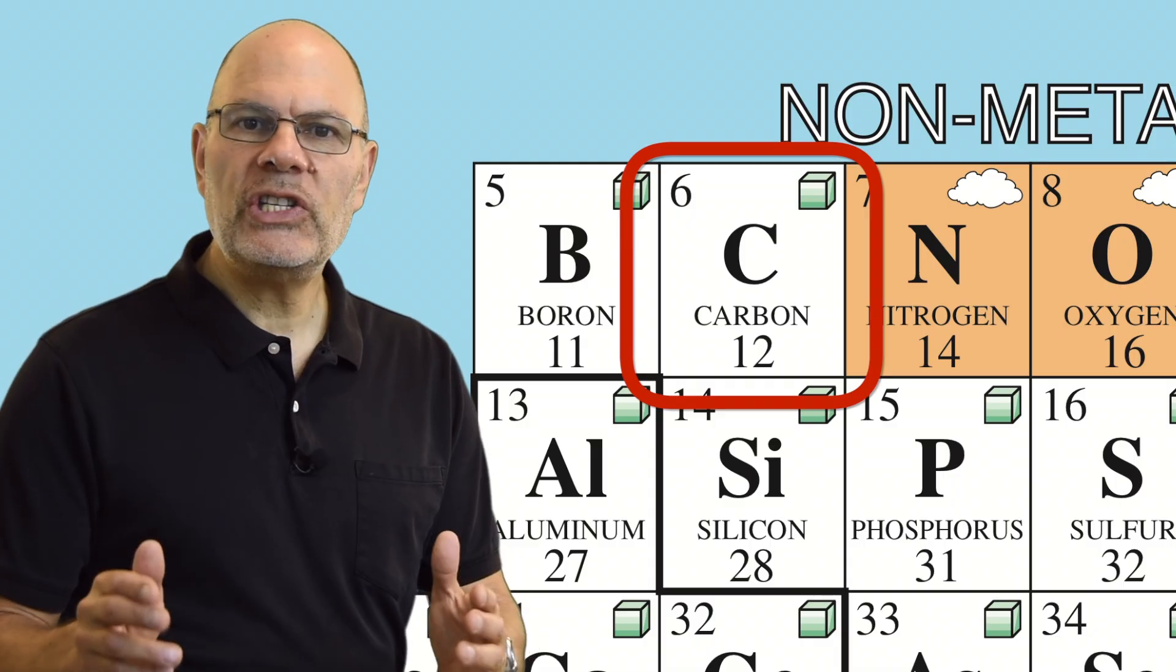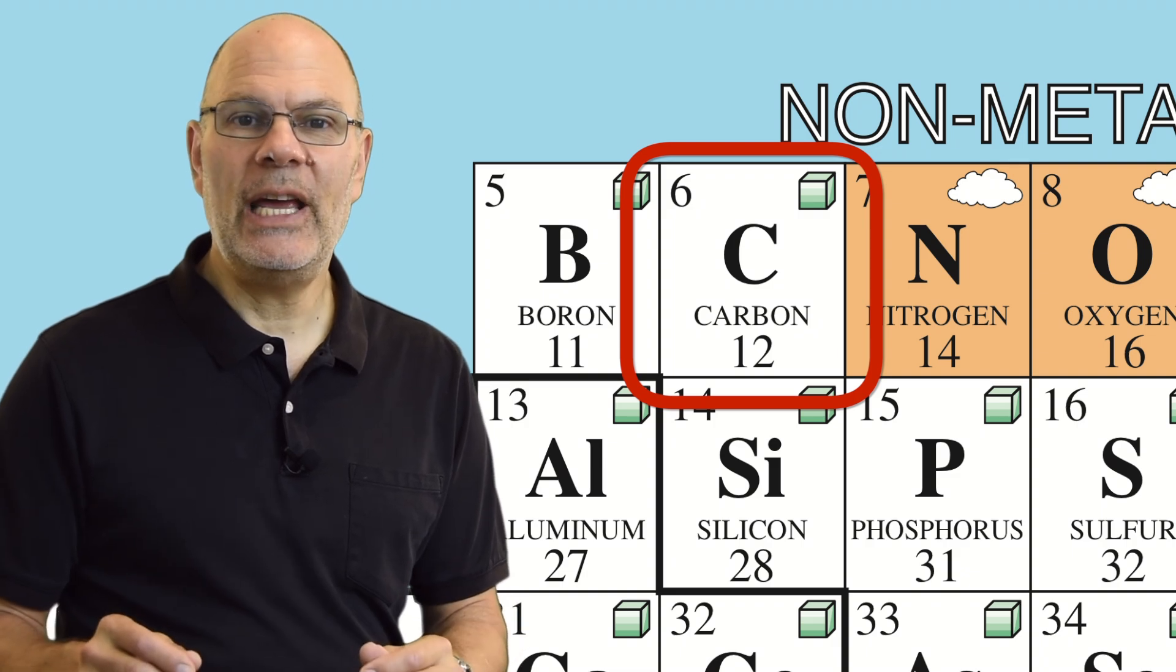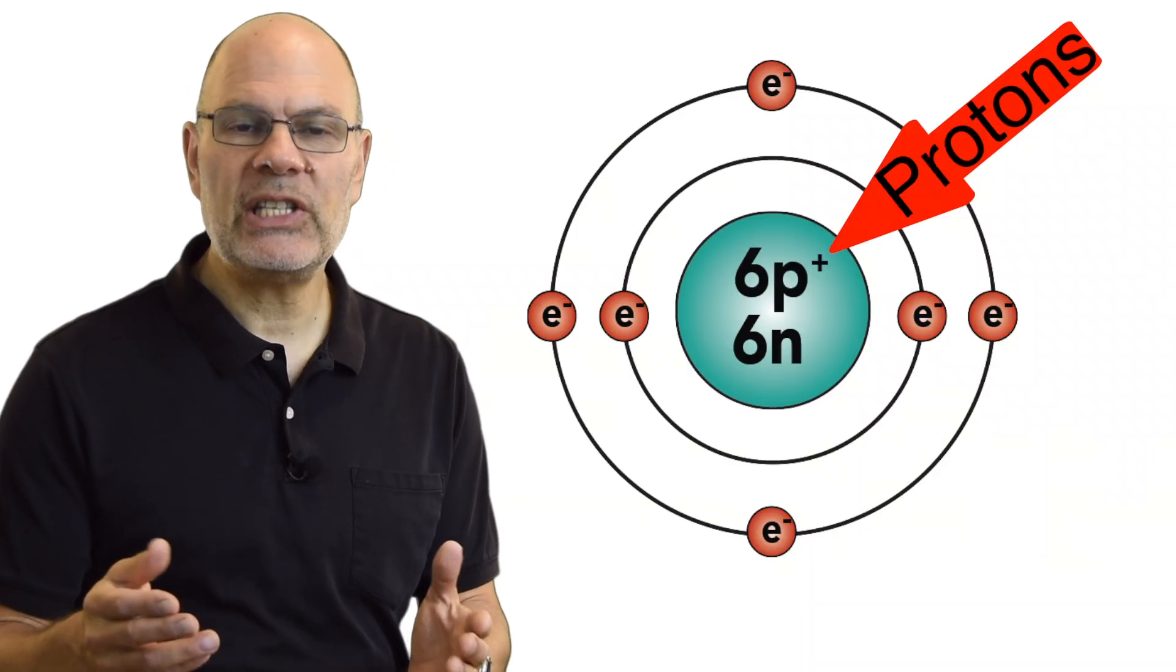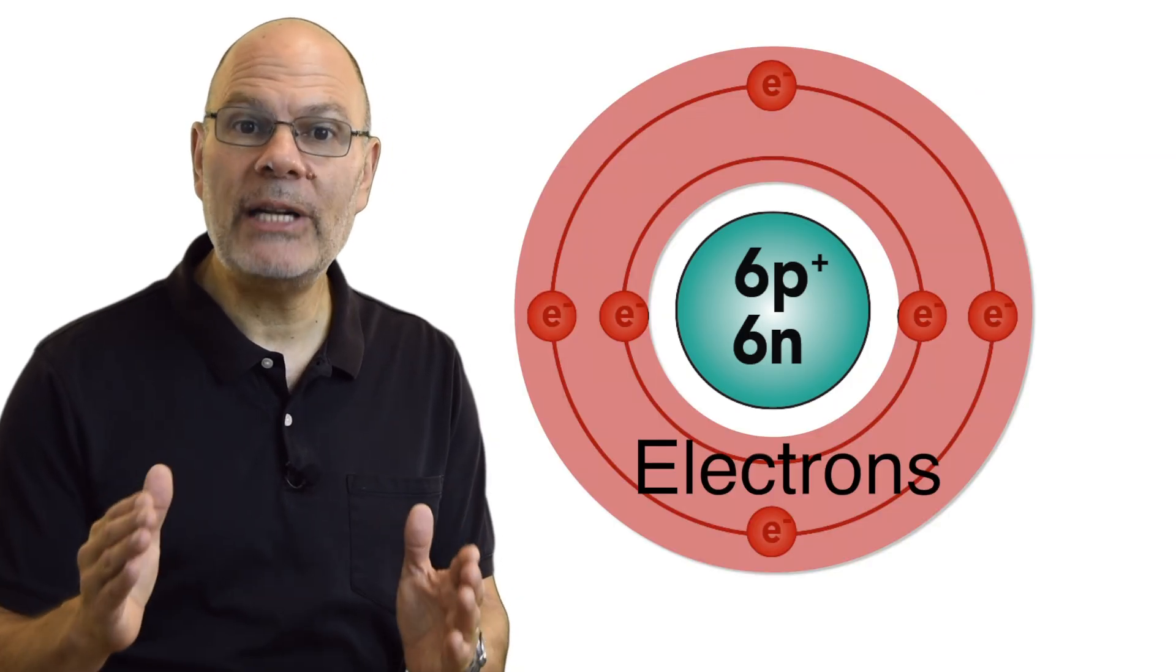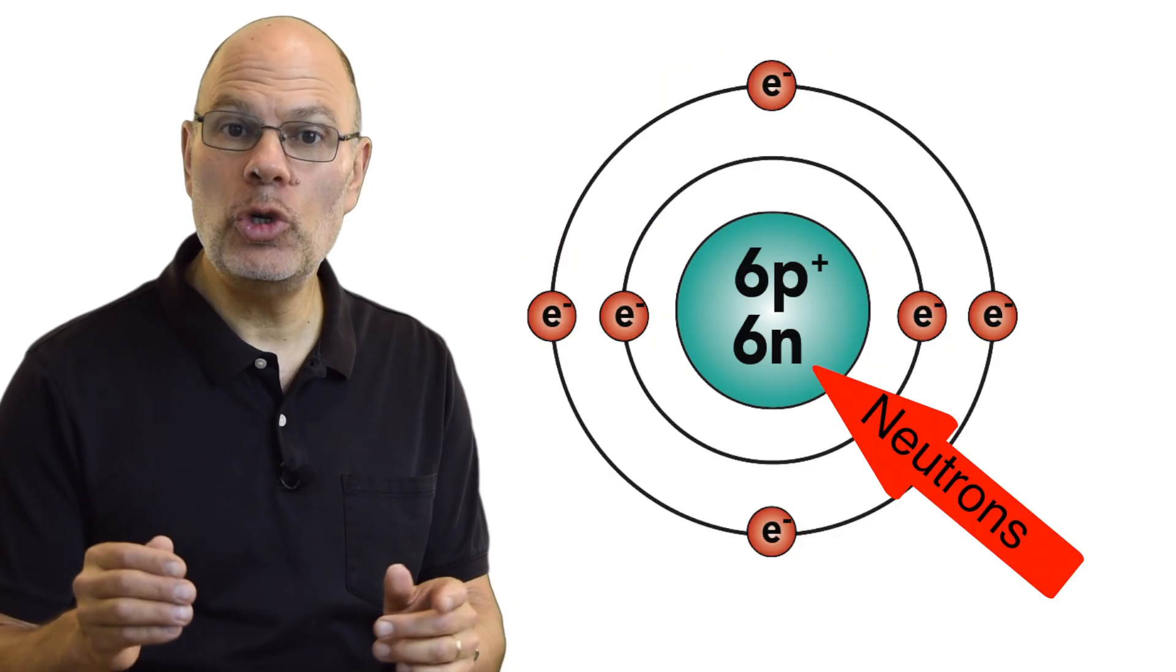Here's why. Carbon is element number six in the periodic table. It's number six because it has six protons. It also has six electrons, and in the most common isotope of carbon, six neutrons.